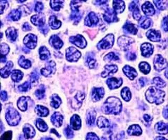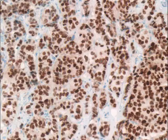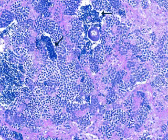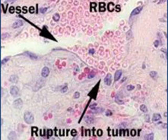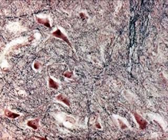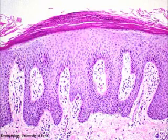ERVs specific to humans, called HERVs, have been tied to multiple cancers including germ cell tumors, breast cancer, seminomas, melanoma, ovarian cancer, and autoimmune diseases like multiple sclerosis, rheumatoid arthritis, cirrhosis, and lupus.